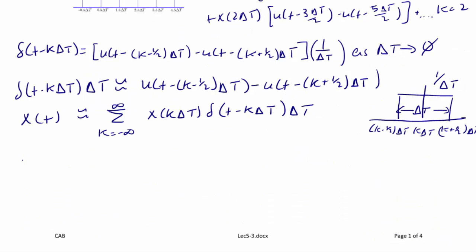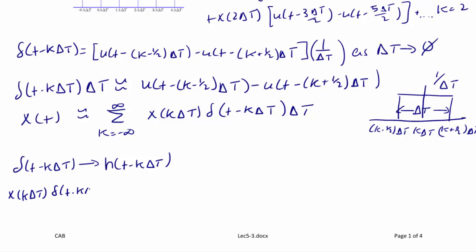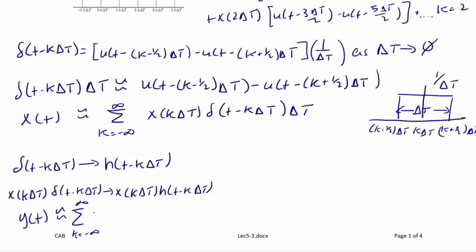For any linear time-invariant system, δ(t − kΔT) as the input yields the impulse response h(t − kΔT). So if we have x(kΔT) times δ(t − kΔT) as input, the output is x(kΔT) times h(t − kΔT). Therefore y(t) is approximately equal to the summation from k = −∞ to +∞ of x(kΔT) · h(t − kΔT) · ΔT.